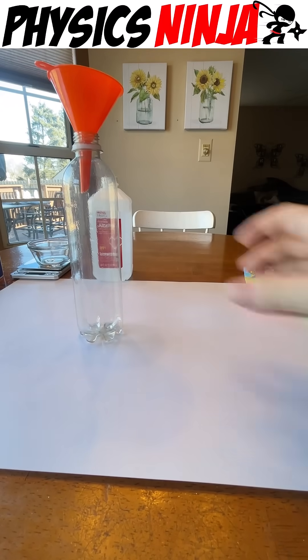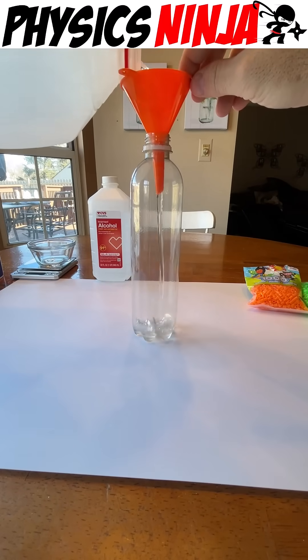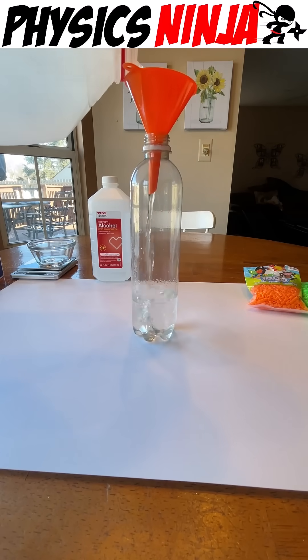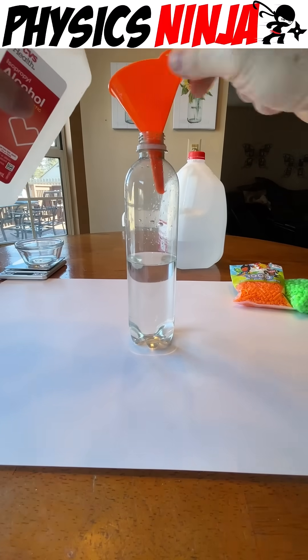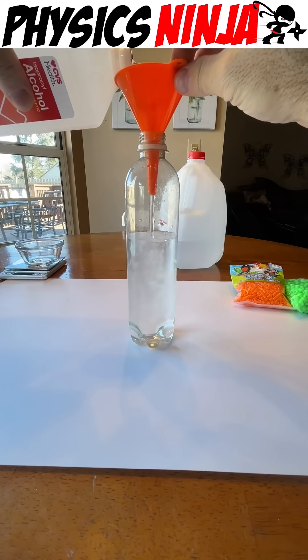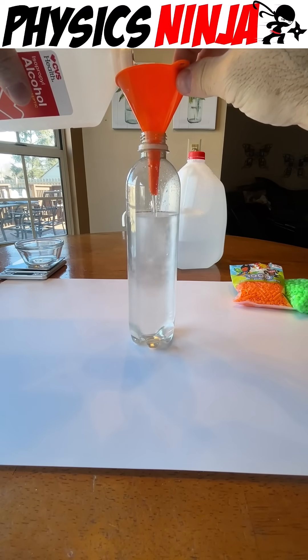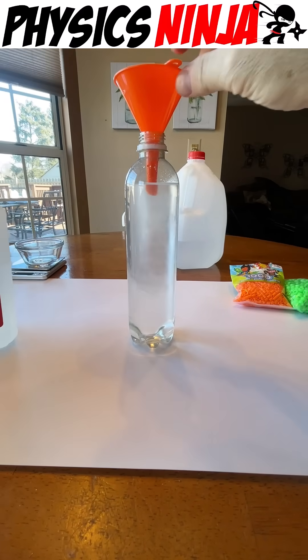We'll start by mixing the fluids. You want to fill that plastic bottle with approximately 40% of distilled water. Next we're gonna add the isopropyl alcohol. The key here is not to fill the bottle all the way to the top. We need to leave room for the rest of the ingredients.